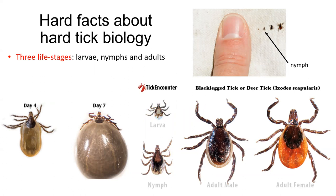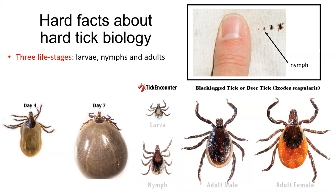Now let's dig into the biology of hard ticks. Notice the picture on the bottom right that represents the black-legged or deer tick, which we'll use as a representative for hard ticks. Hard ticks have three life stages, which include the larva, nymph, and adult — male and female. The picture above compares these tick life stages to a person's finger. As you can see, they are very small.